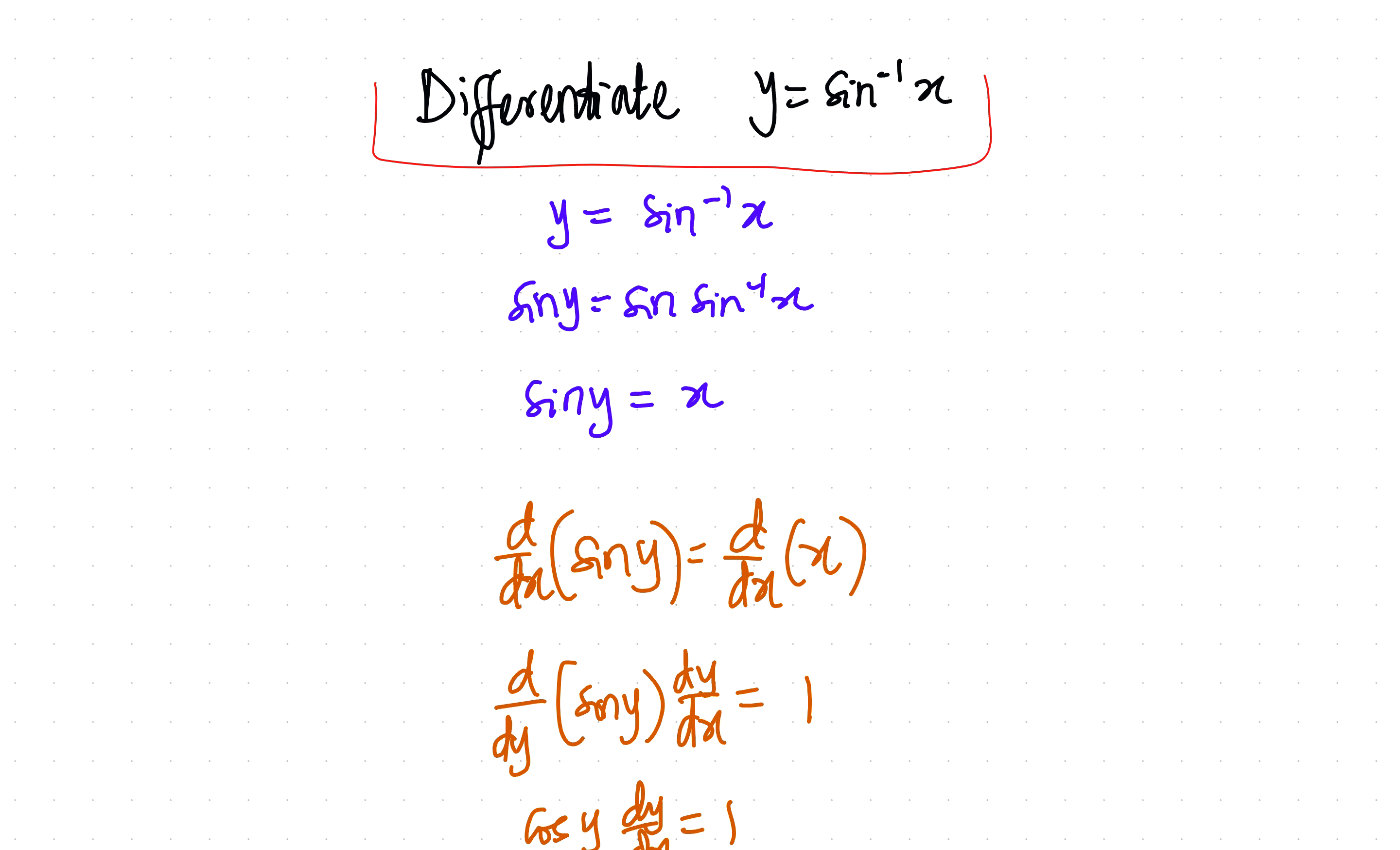At this point, I'd like to quickly clarify that there's a lot of confusion about the difference between one over sine x. One over sine x is cosec x.